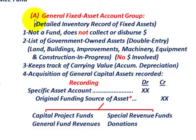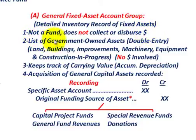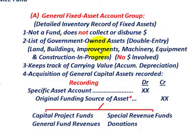Now let's move over to our general fixed asset account group. This is where you're going to keep detailed inventory records of the fixed assets — it just keeps a record of what's going on with your fixed assets. First, it's not a fund — it does not collect or disperse monies. Second, it's a list of government-owned assets, and we use a double-entry form to keep track of those assets.